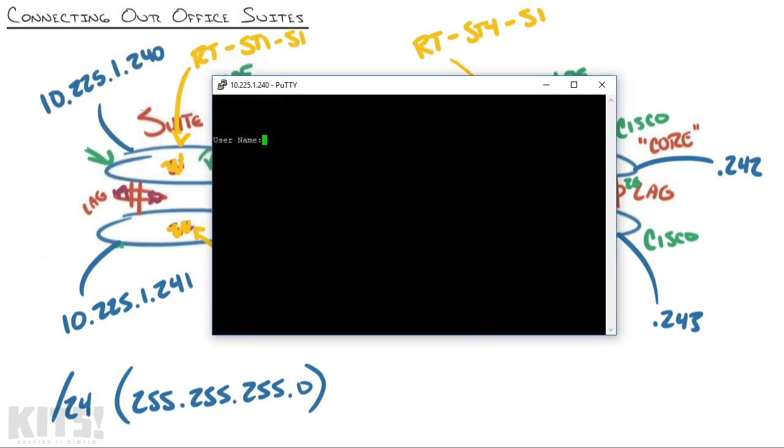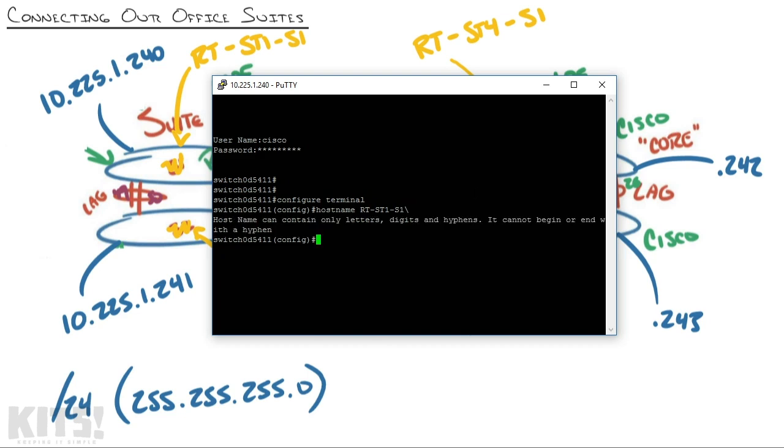It's asking for my username. I'll type in Cisco and the password I've given it. And I'm now sitting here on switchod5411 in privilege mode. I'm gonna move to global configuration mode, configure terminal, and type in hostname RT-ST1-S1. Enter. Oh, good grief. Hit the up arrow. Enter. There we go. And I can see the prompt is now changed. RT-ST1-S1 at every single prompt on this switch.